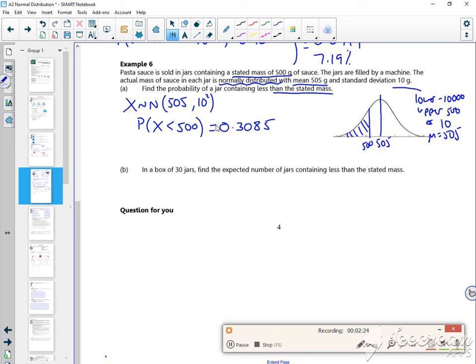So then it says in a box of 30 jars find the expected number. Now, you kind of know expected numbers. It's just the number of times it happens times by the probability. It kind of moves us over to a binomial for an expected number. It's like if you were flipping a coin a hundred times, how many times would you expect to get a tail? And it's kind of binomial success and failure.